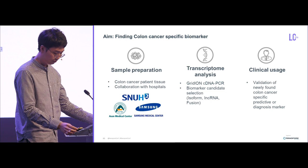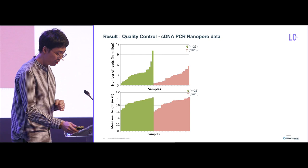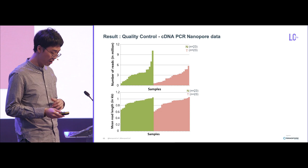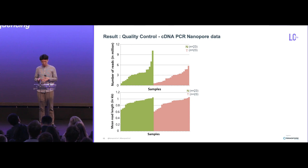The quality of the data that we generated is shown here. For about 23 mostly paired normal and tumor samples, we generated about 3 million reads on average, with an average length of 800 base pairs. For all of our datasets, we filtered out reads with quality lower than 5 and reads shorter than 200 base pairs.